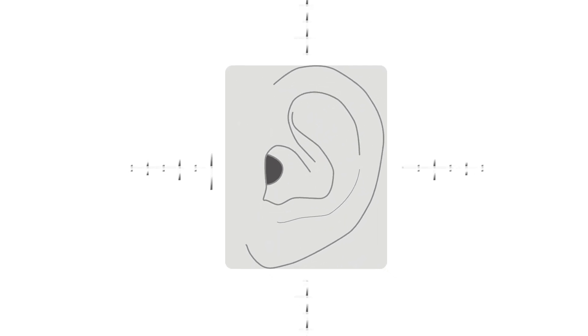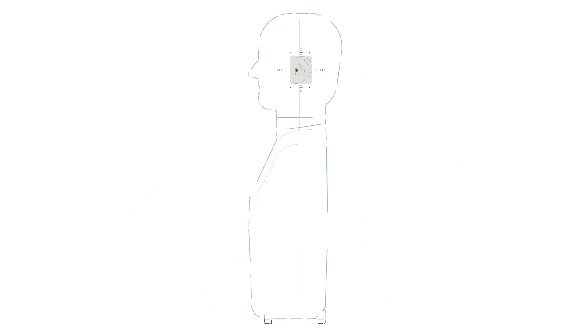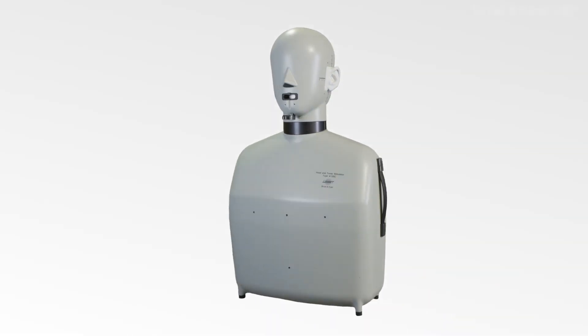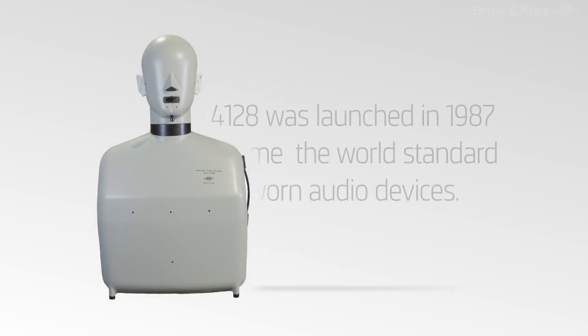Research showed that the pinna, as well as the head and shoulders, impacted free and diffuse field ear response. This resulted in the development of the head and torso simulator, HATS, launched in 1987. HATS soon became the world's standard for testing telephones, headsets, and other worn audio devices.